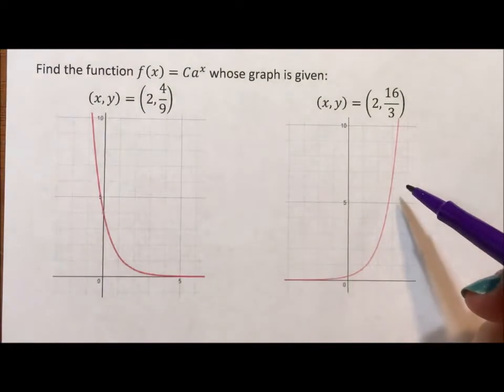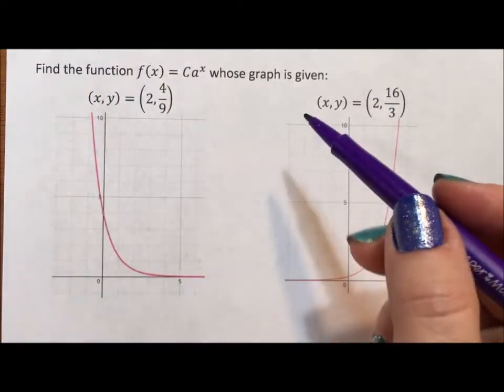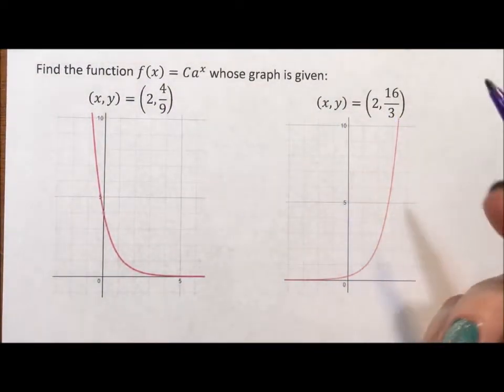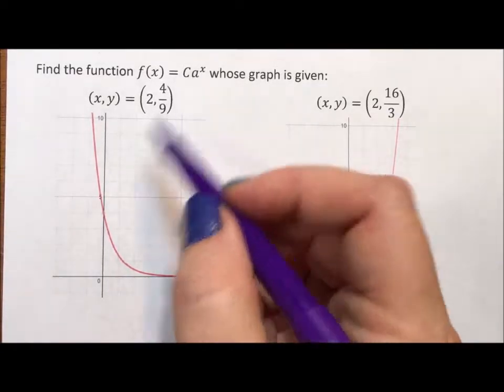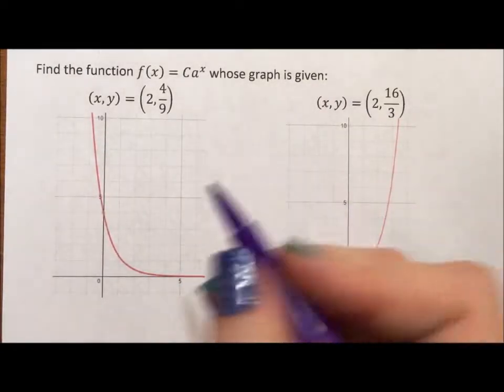And here I have two graphs with an ordered pair given, and it says find the function, so find c, find a. You have the graph, figure it out.